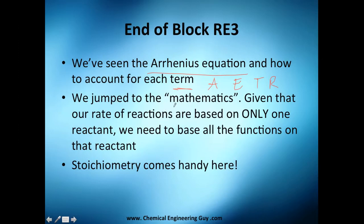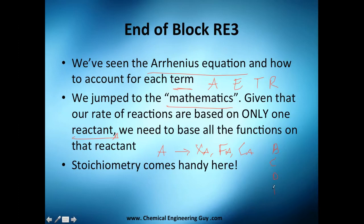We jumped to the mathematics. Given that our rate of reaction is based only on one reactant, let's say A, we base everything on conversion of A, flow of A, and concentration of A. We base all the other species — let's say B, C, D, inert — in terms of that reactant A.